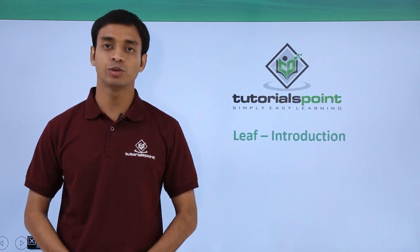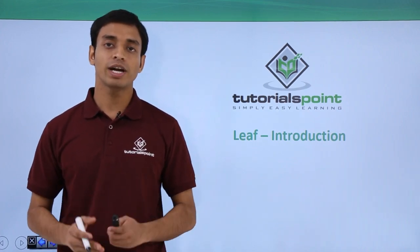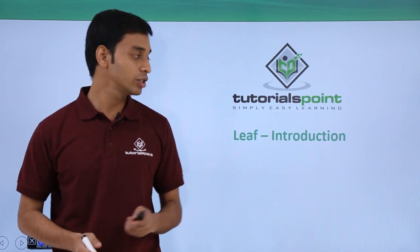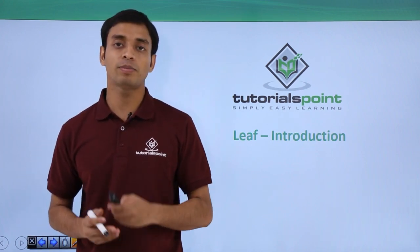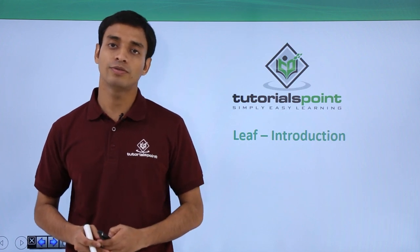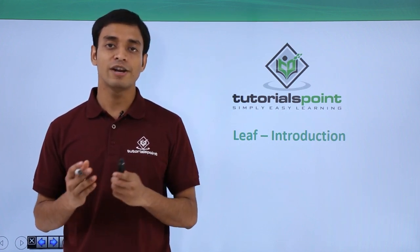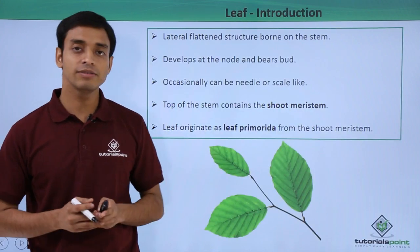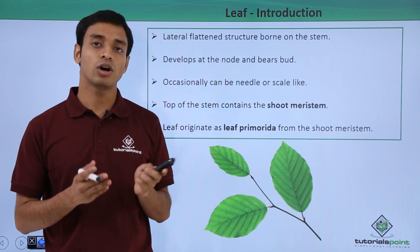Hello everyone, welcome to Tutorials Point. In this video we are going to talk about a very important structure of plants, which is the leaf. This is the part of a plant which actually makes food through the process of photosynthesis. So let us introduce ourselves and know more about the leaf and its structure. What is the leaf? These are lateral flattened structures which are born on the stem.